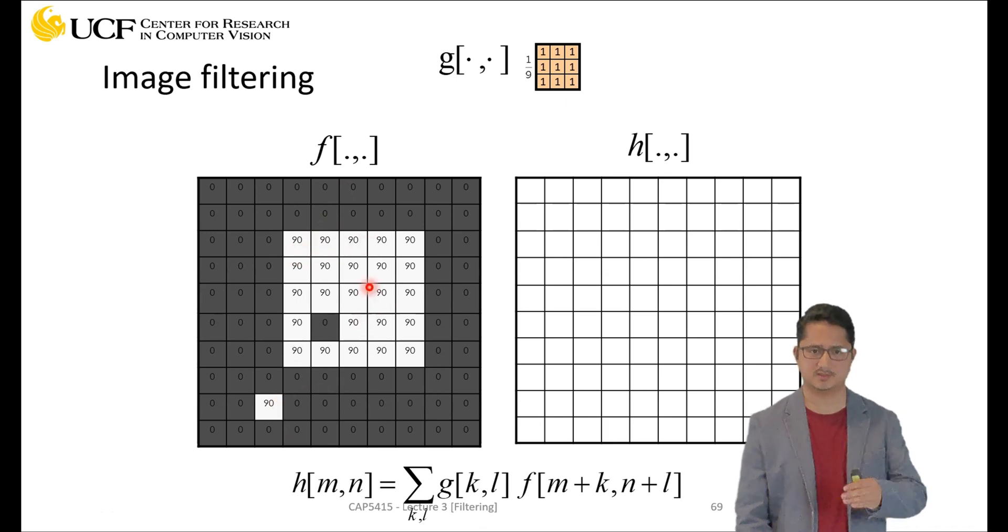So let's say this is your image patch and let's perform filtering using this box operator or box filter. What will happen? You will first place this filter at this location and perform filtering.